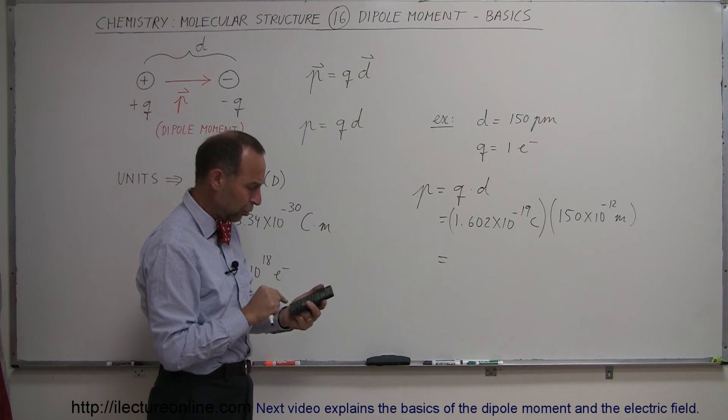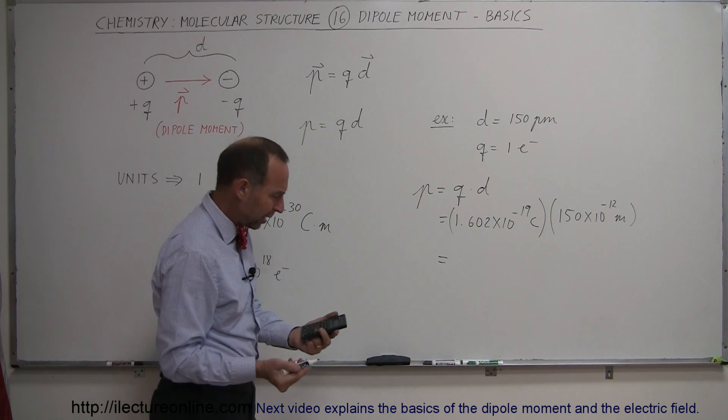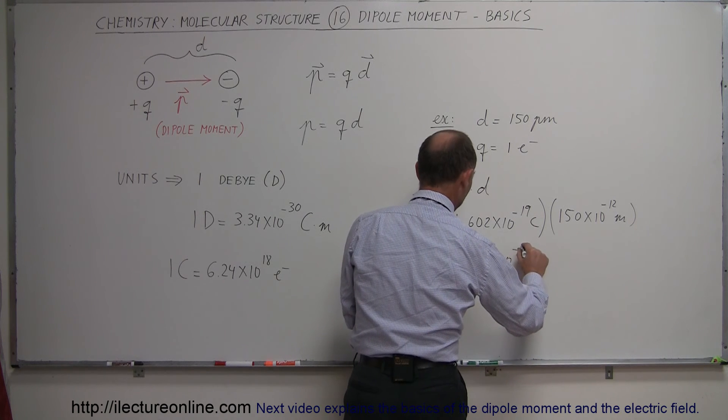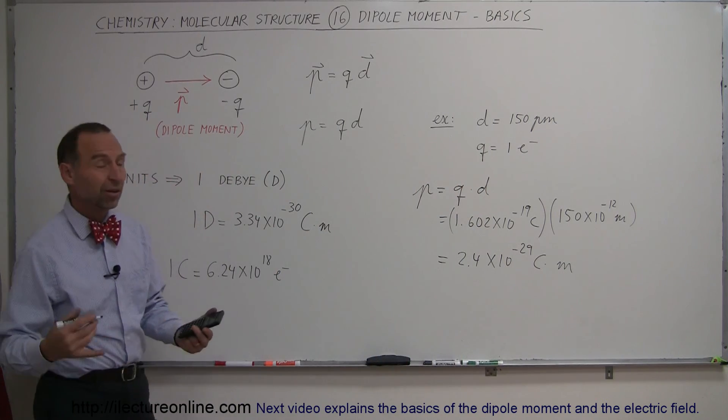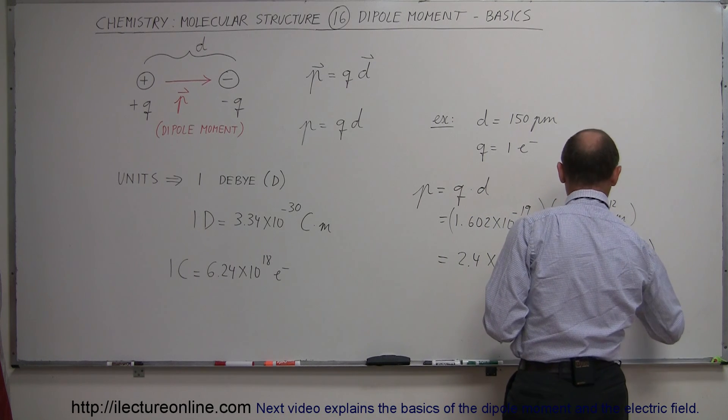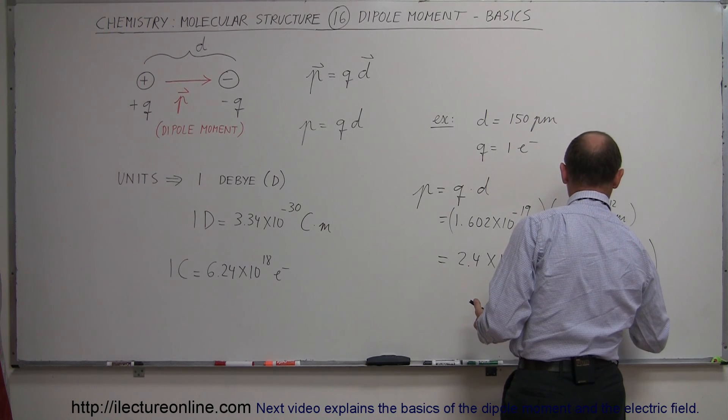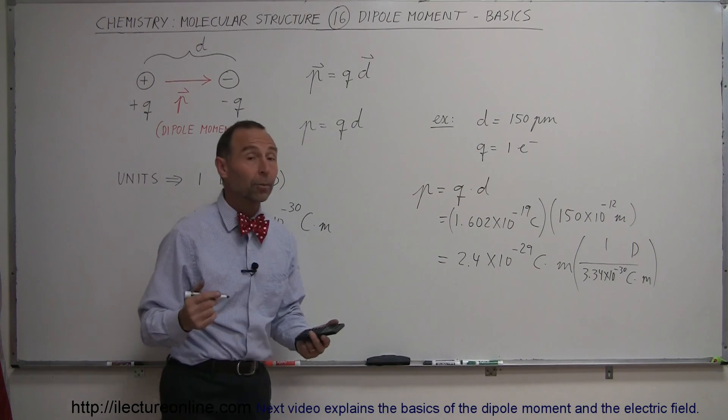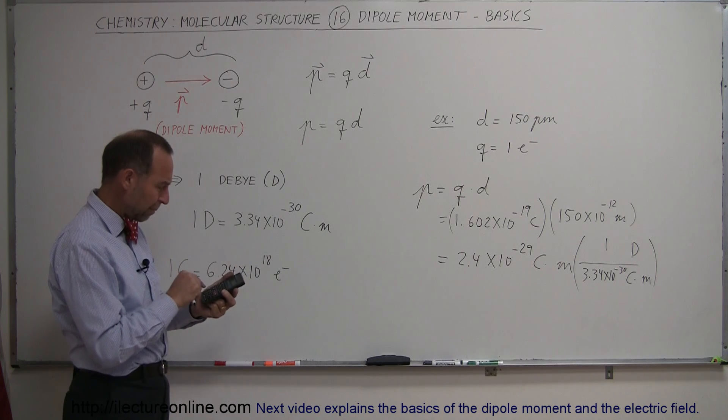So 1.602 times 10 to the minus 19, times 150 times 10 to the minus 12 equals... We end up with 2.4 times 10 to the minus 29 coulombs times meters. So how many Debye is that? We can convert that to Debye. We want Debye in the numerator, we want coulomb-meters in the denominator. One Debye is equal to 3.34 times 10 to the minus 30. So if you divide this number by that, we should get the number of Debye's.